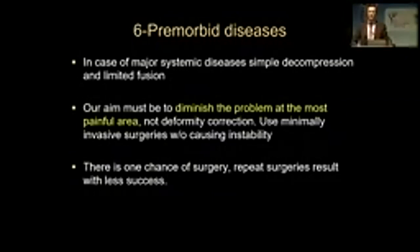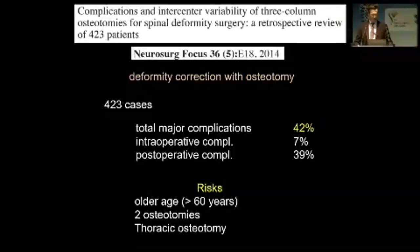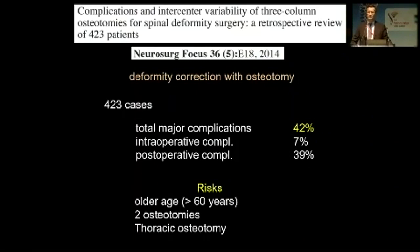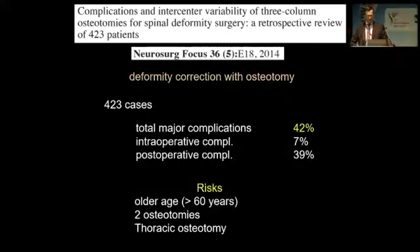One study on deformity correction with osteotomy declared that total major complications reached 42%. The risks are higher if the age is more than 60 years, if there are two osteotomies, or if it is a thoracic osteotomy — because the spinal cord is there, making it more risky.